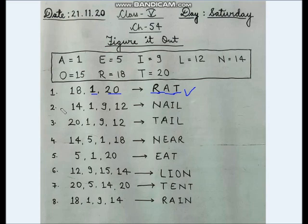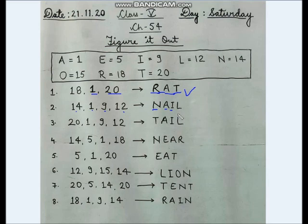Question 2: the word made up by letters 14, 1, 9, 12 is a covering that grows on the back of our fingers and toes. Decoding: 14 is N, 1 is A, 9 is I, 12 is L. So the answer is nail, which is a covering that grows on the back of our fingers and toes.